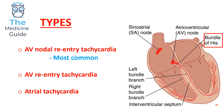A supraventricular tachycardia is essentially a tachycardia which is arising above the level of the bundle of His. Therefore, this type of tachycardia is arising above the ventricles.